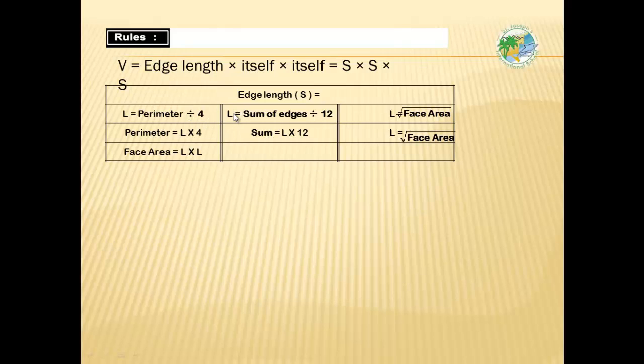So the side length, or edge length, equals the sum of edges over 12. If we want to find the side length, we can write from the area, square root of the area. The perimeter is side length times 4. So if we want to find the side length, we can write the sum divided by 12. Face area equals side length times side length. We can find the side length by cubic root of volume, if we want to find the side length or edge length.